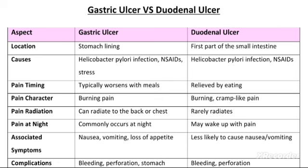So this is the main difference. First difference jo hai, woh hai location. Gastric ulcer stomach ki lining pe hota hai — stomach ki lining ka jo ulcer hai usko hum kehte hain gastric ulcer. Aur jo duodenal ulcer hai, woh small intestine ke sabse first part, yaani duodenum, ka ulcer hota hai — usko hum kehte hain duodenal ulcer.